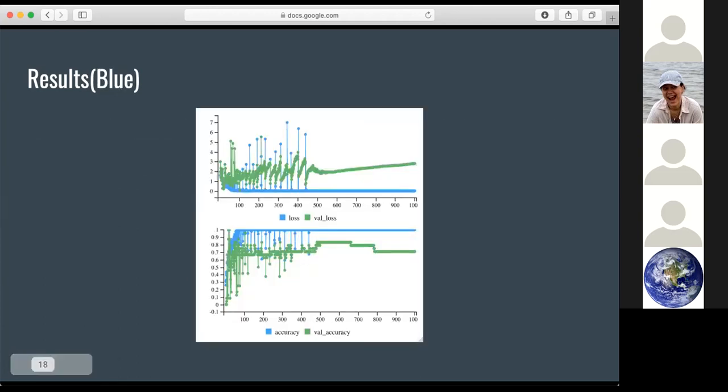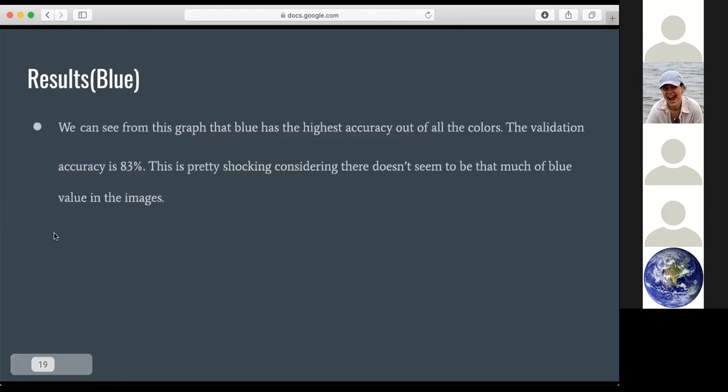So this is the result for blue. You can see from the graph that it has the highest accuracy out of all the colors. It's around 83%. This is pretty shocking considering that there didn't seem to be a lot of blue coloring with the images. Kind of weird.